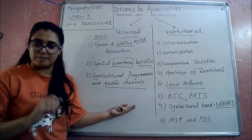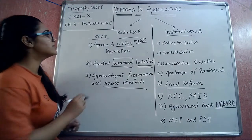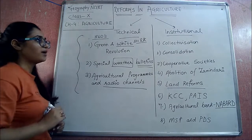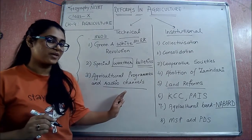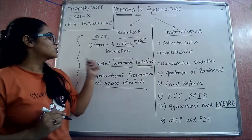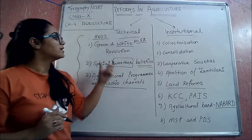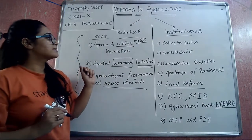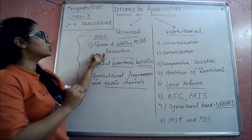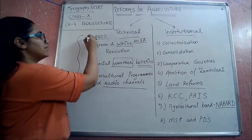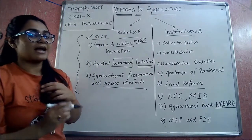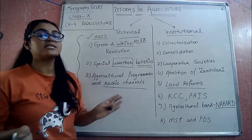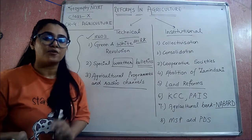So this was it for the technical reforms. I hope it was helpful. The major focus you need to put is on the Green and White Revolution. The green revolution's year was the 1960s, and the major states in which it was first introduced were Punjab, Haryana, and parts of western UP.